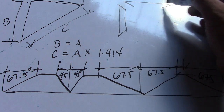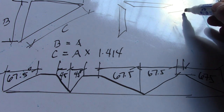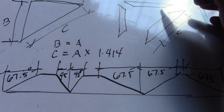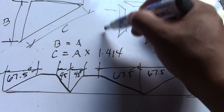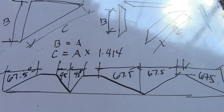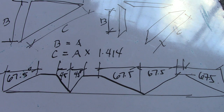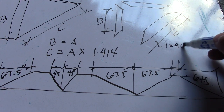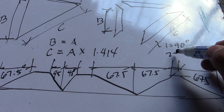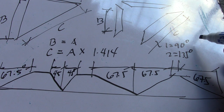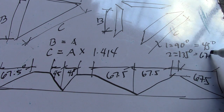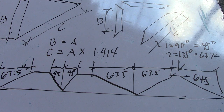So this is dimension C, dimension A, and dimension B. We have 190 degrees to 135 degrees, to 135 degrees, which equals a 45-degree cut and a 67.5-degree cut. So this is how to make an iron bracket.